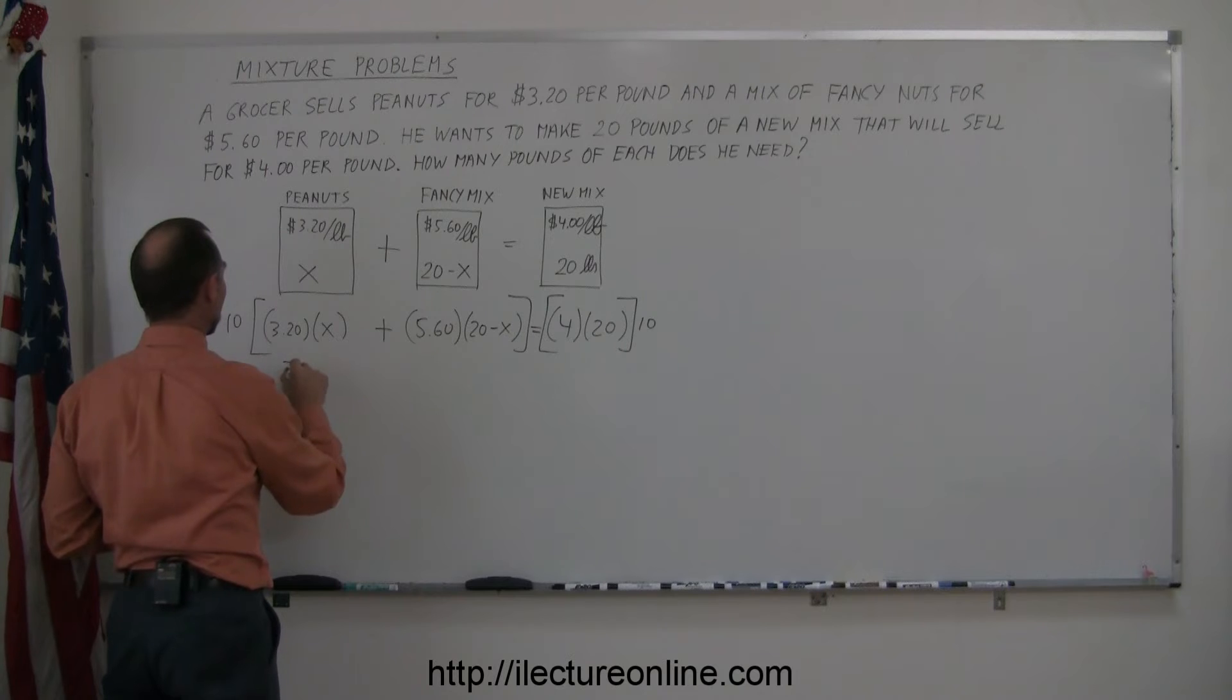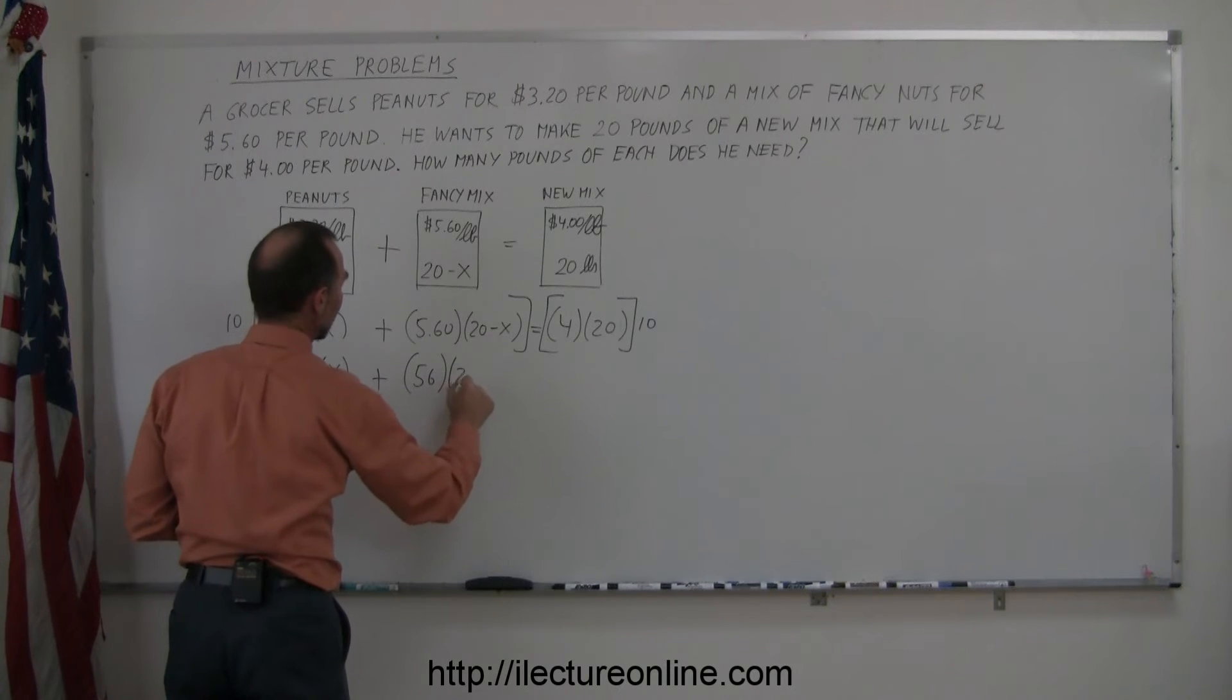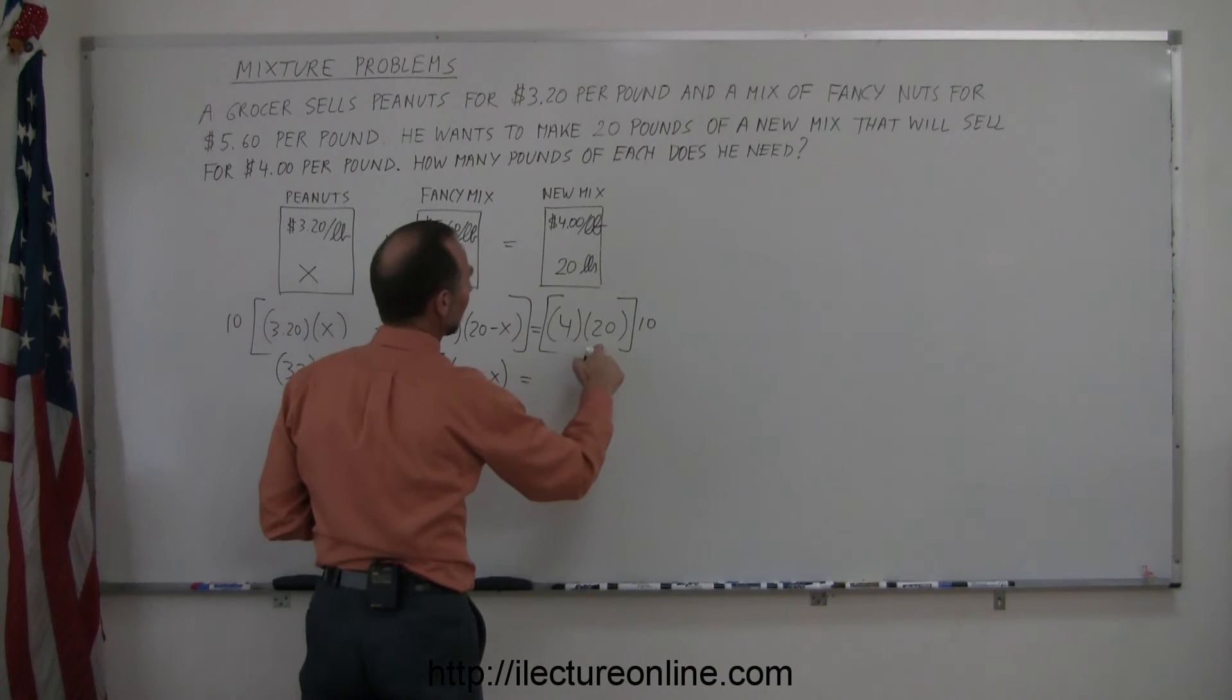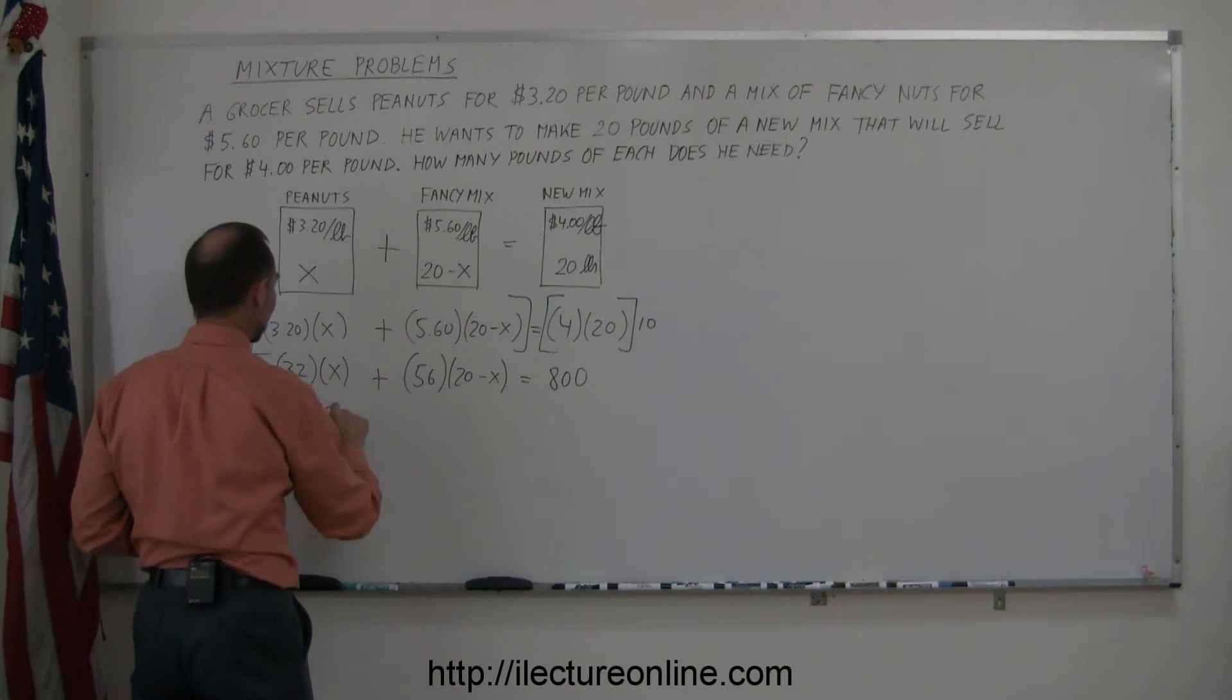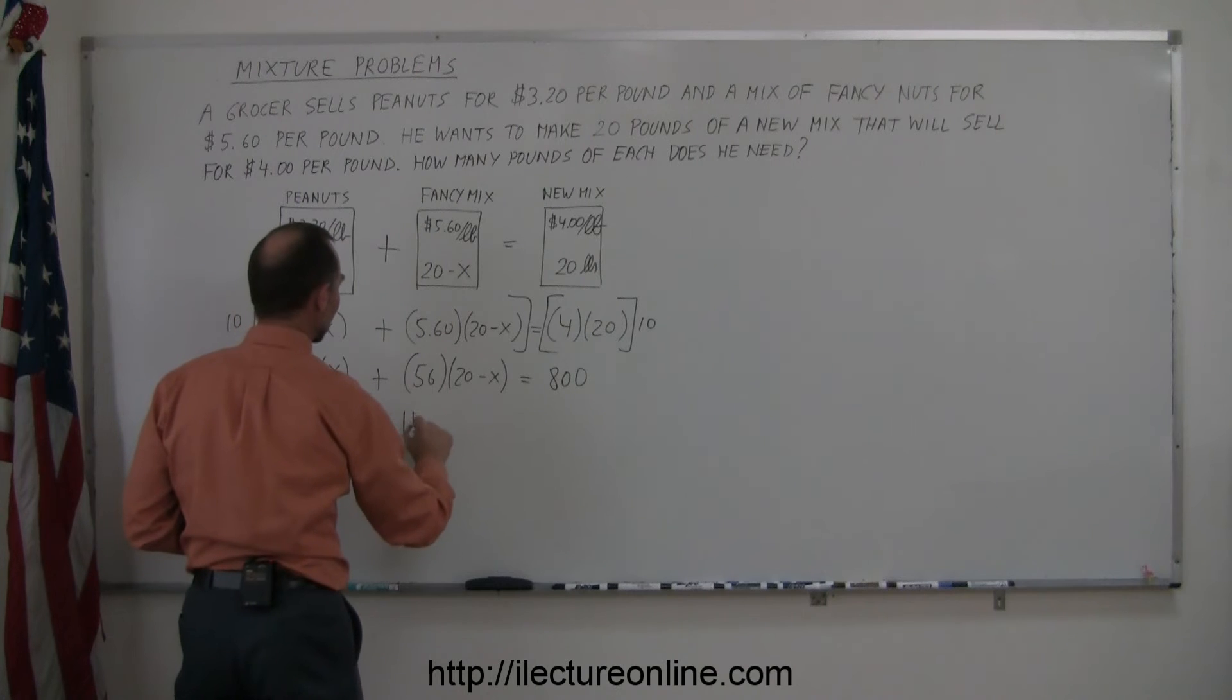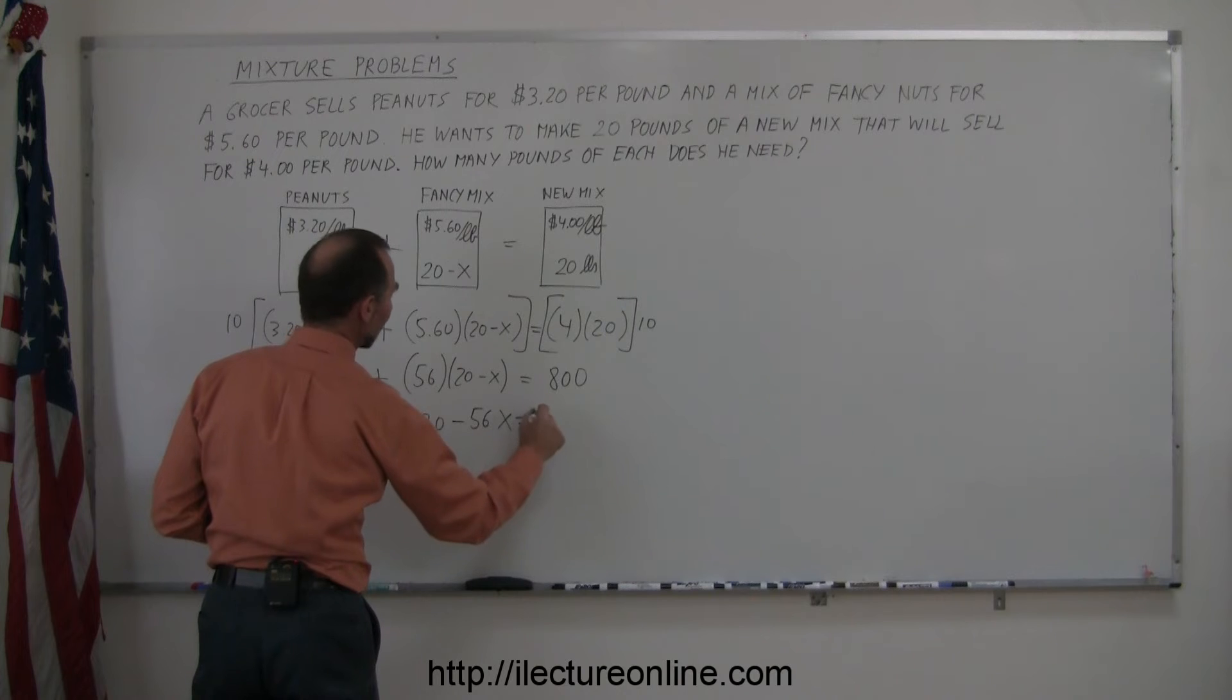10 times 3.2 is 32, so we have 32 times X, plus 10 times 5.6 is 56 times (20 minus X), equals 4 times 20, that's 80, times 10, that's 800. Now we get rid of the parentheses. So this is 32X plus 56 times 20. 20 times 50 is 1,000, 20 times 6 is 120, so that's 1,120 minus 56X equals 800.